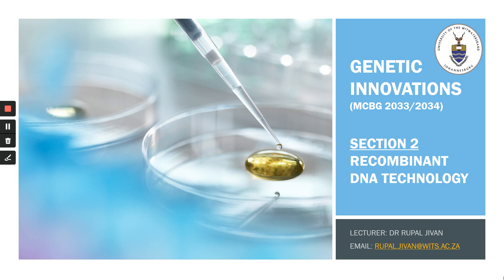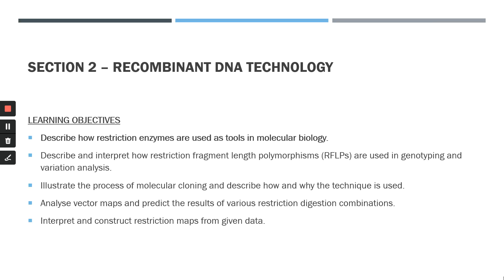Welcome to section 2 on recombinant DNA technology. In this section, our learning objectives are to describe how restriction enzymes are used as tools in molecular biology, to describe and interpret how restriction fragment length polymorphisms are used in genotyping and variation analysis, to illustrate the process of molecular cloning, to analyze vector maps and predict the results of various restriction digestion combinations, and to interpret and construct restriction maps from given data. In this lecture, we'll focus on the first learning objective: how restriction enzymes are used as tools in molecular biology.